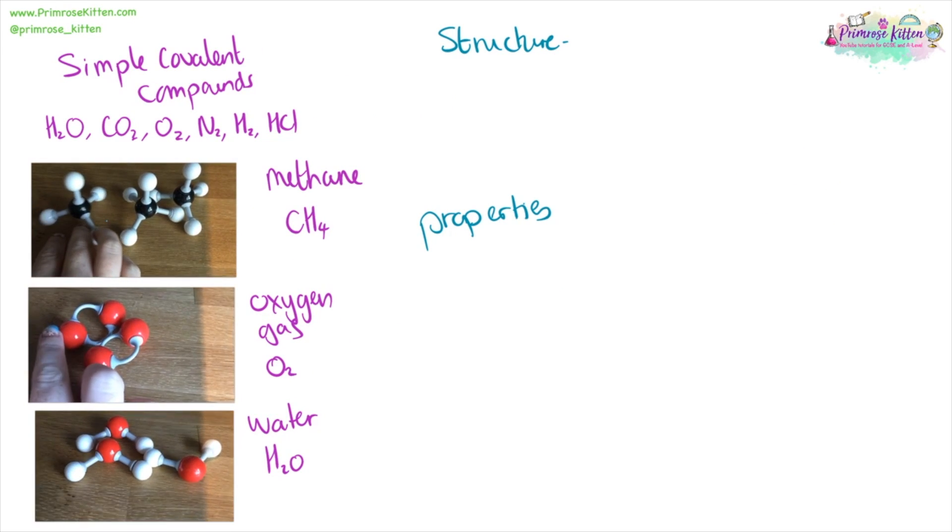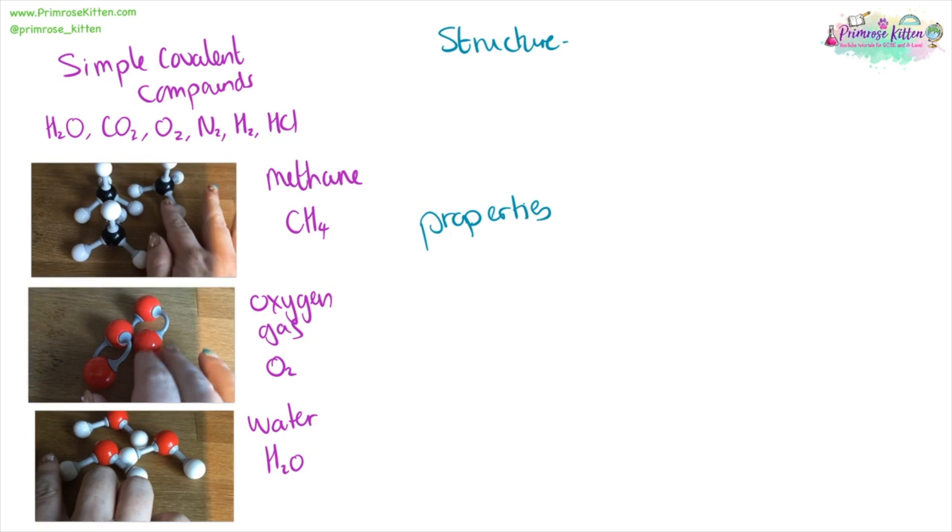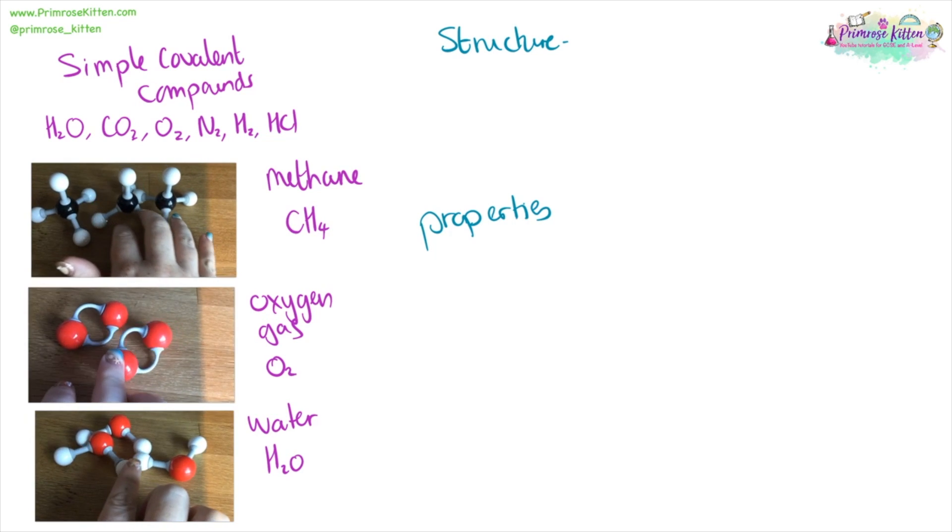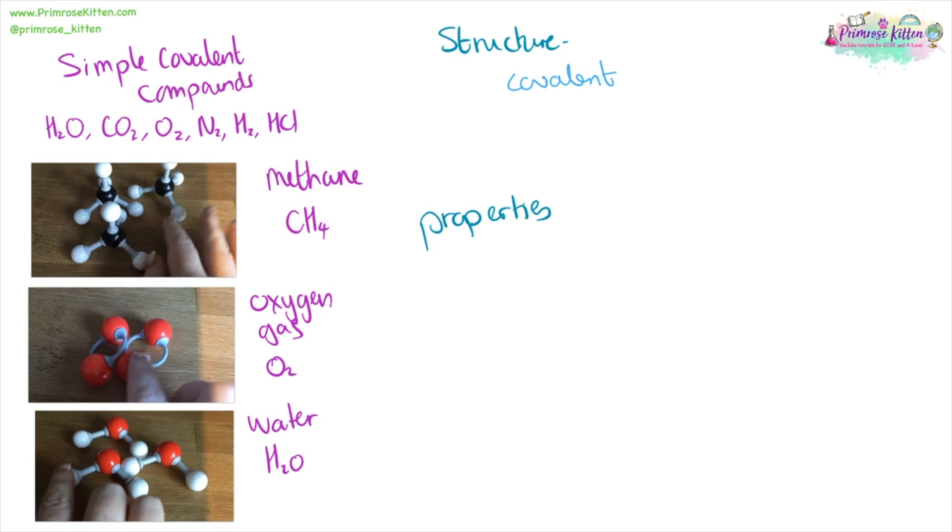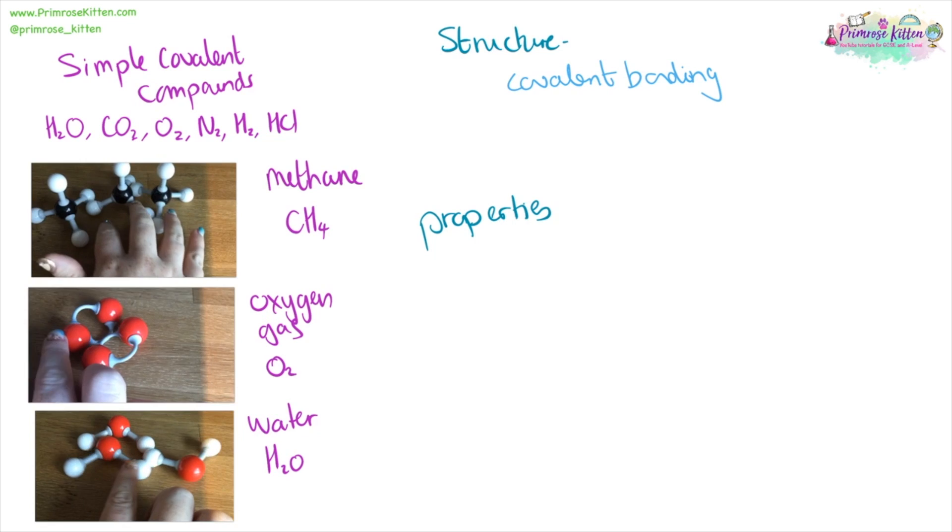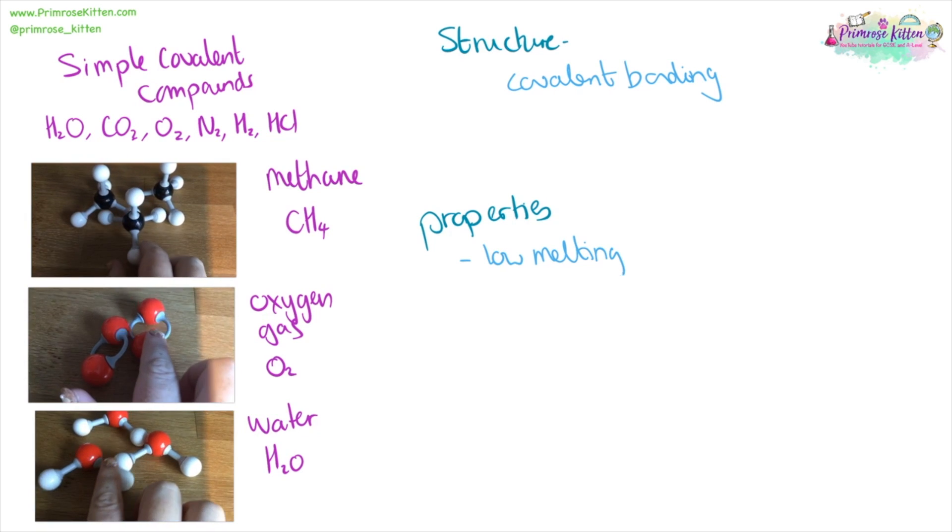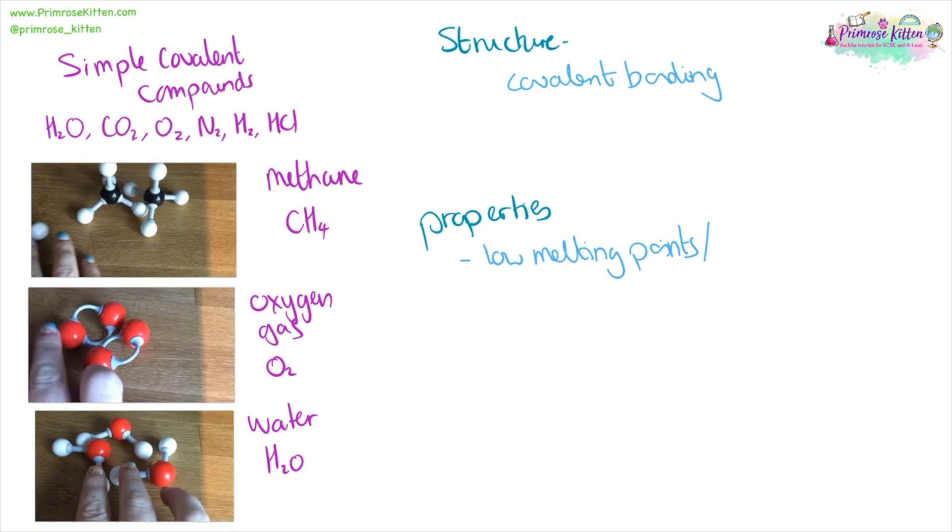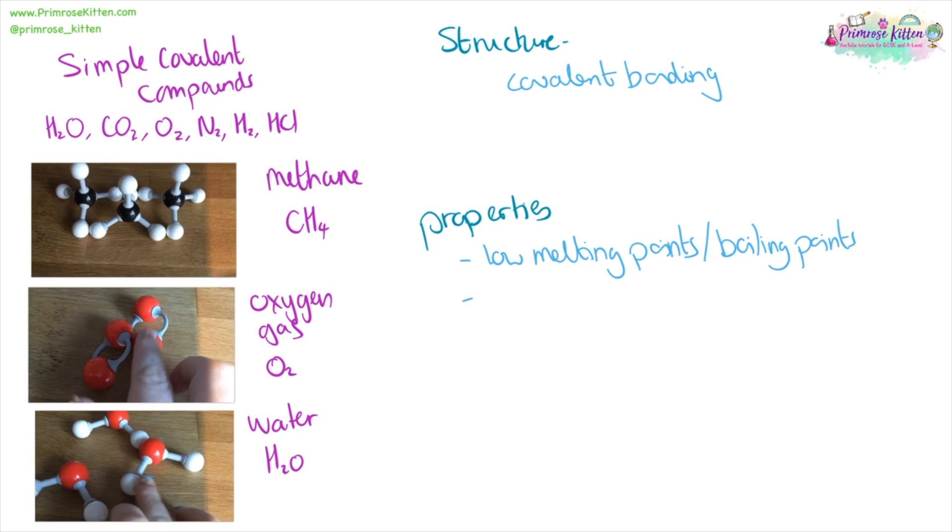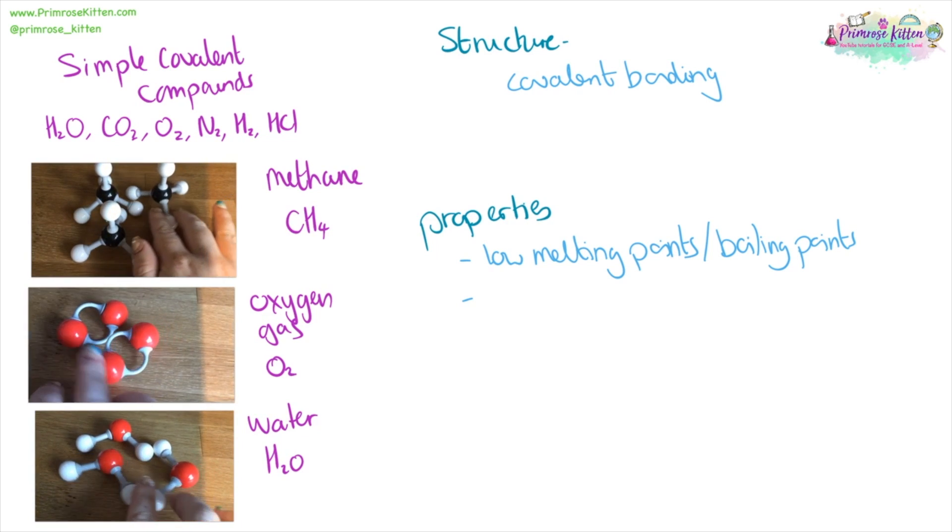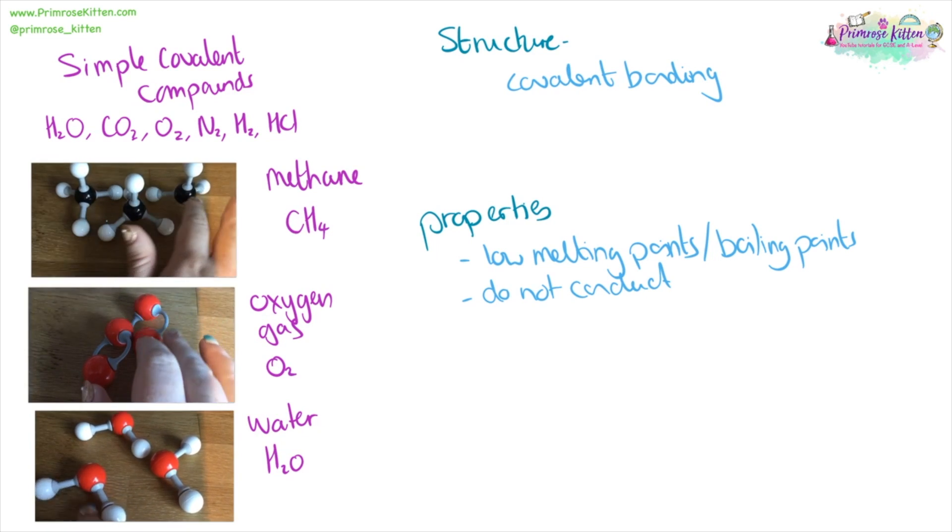For simple covalent compounds, such as water, carbon dioxide, oxygen, nitrogen, hydrogen gas, hydrochloric acid, or methane, they are very small structures. They have covalent bonding. Their properties is that they have low melting points and boiling points. They're generally going to be a gas at room temperature or a liquid at room temperature. They do not conduct electricity.